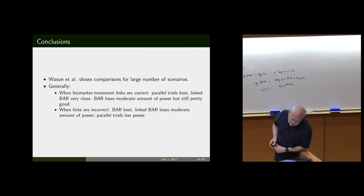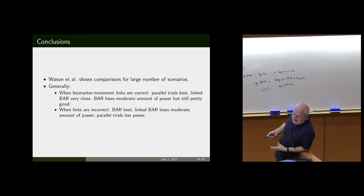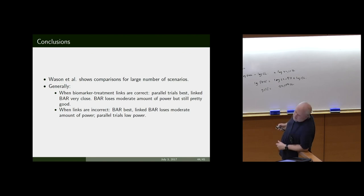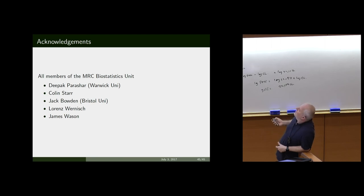To conclude: the paper shows more comparisons, but when Bayesian treatment links are correct, parallel trials is best since you're not wasting time on off-treatment effects, our linked Bayesian adaptive randomization is very close, and Bayesian adaptive randomization loses a little power but is still good. When links are incorrect, Bayesian adaptive randomization is definitely best, linked design doesn't do too badly, but parallel trials have very low power. Thanks to all those involved in these two pieces of work.